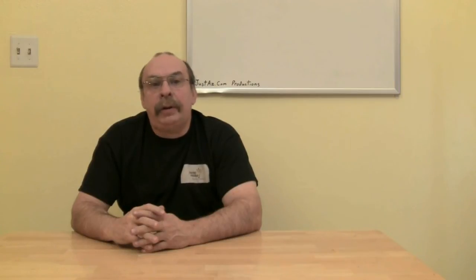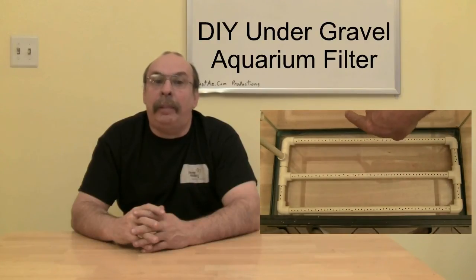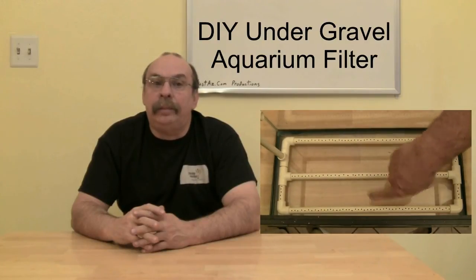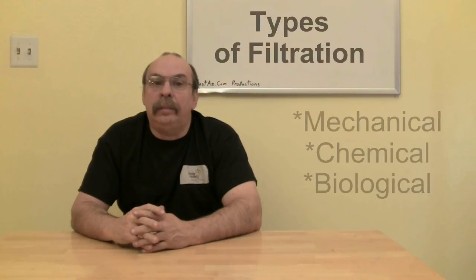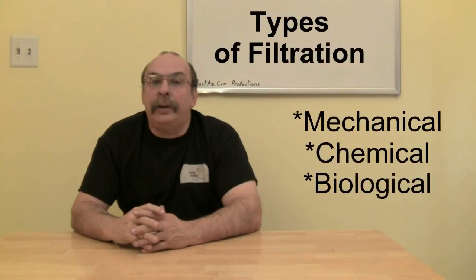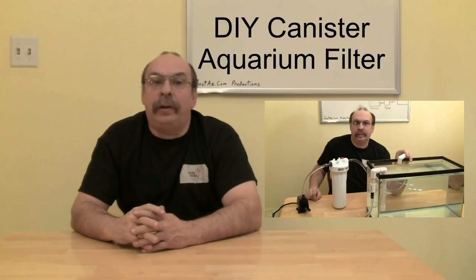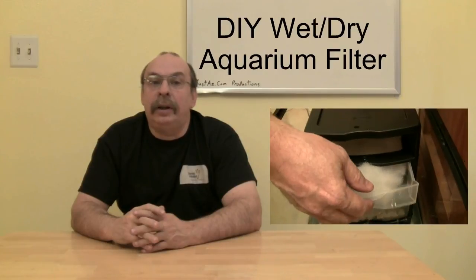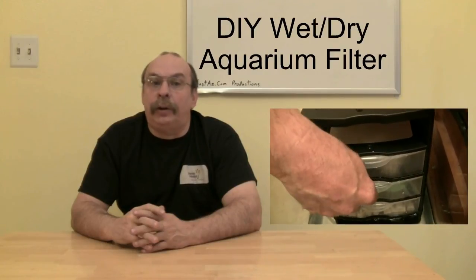In episode 5 DIY under gravel aquarium filter I build a biological filter. Both the canister filter and wet dry trickle filter use all three types of filtration. You can see the canister filter in episode 6 and the wet dry trickle filter in episode 7.